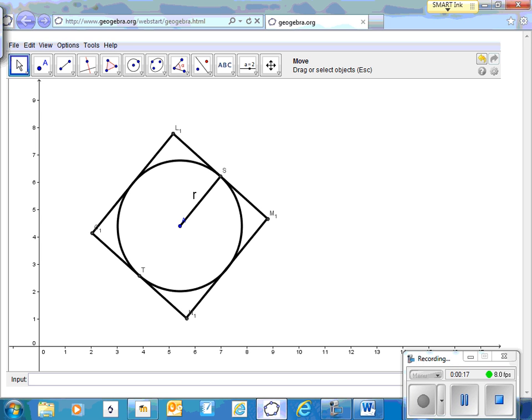So if this circle inscribed in the square has a radius, let's call it R for radius, then we know that the length of a side of the square would be two R.